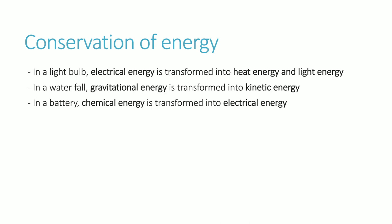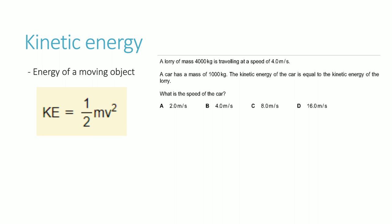Let's take a look at a few examples of how this might happen. In a light bulb, electrical energy is simply transformed into heat energy and light energy. In a waterfall, the gravitational energy of water high above the ground is transformed into kinetic energy. In a battery, chemical energy is transformed into electrical energy.